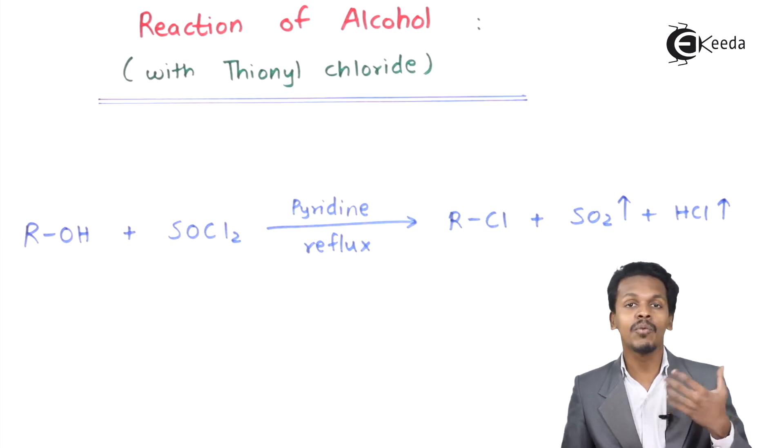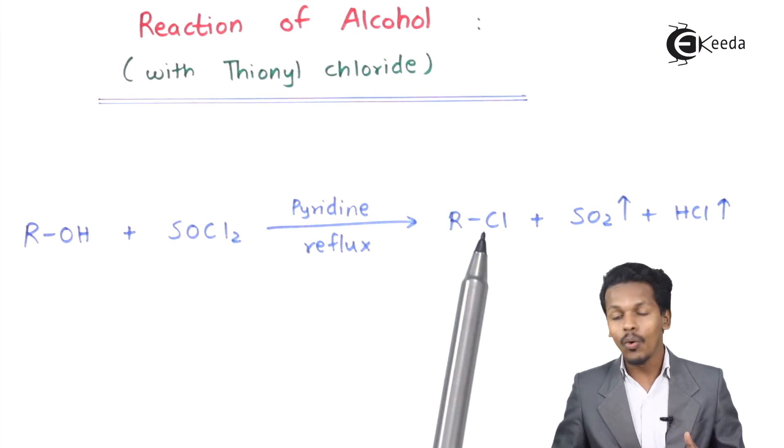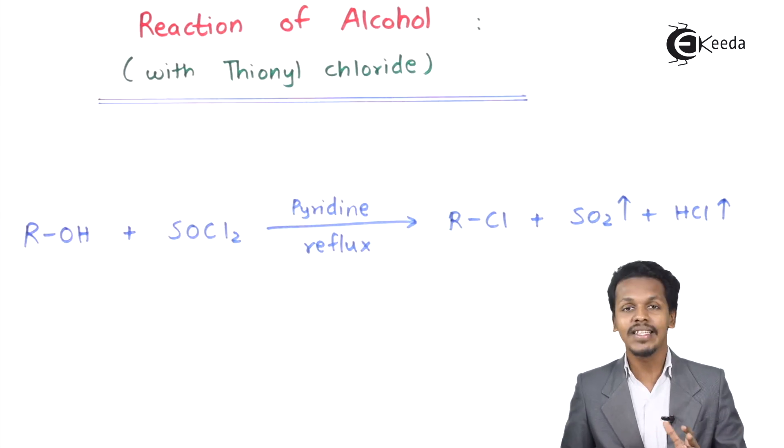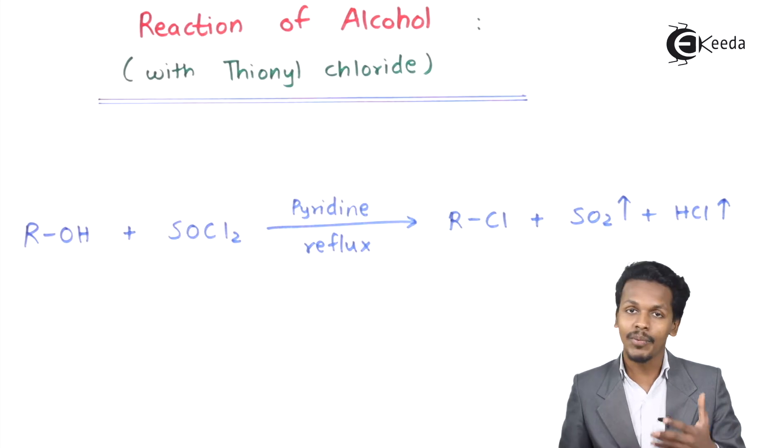Therefore, we have only alkyl halide. That's the reason a higher percentage of alkyl halide can be obtained whenever an alcohol is treated with thionyl chloride.